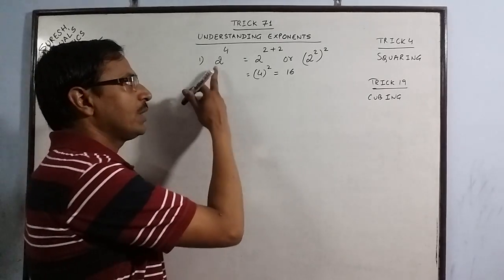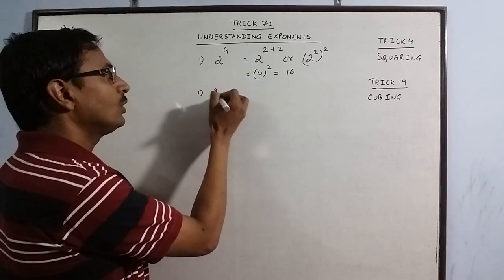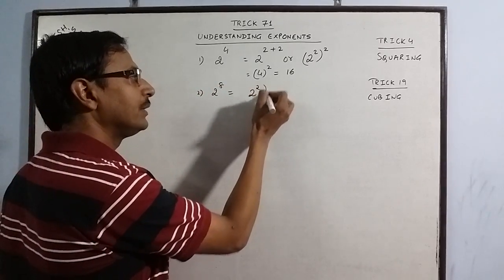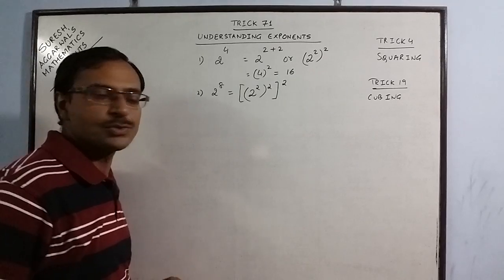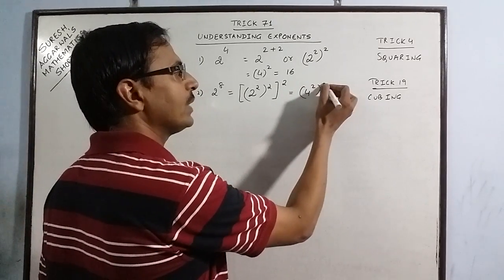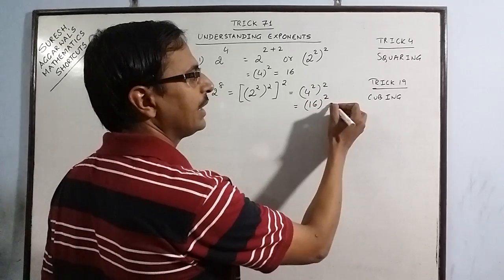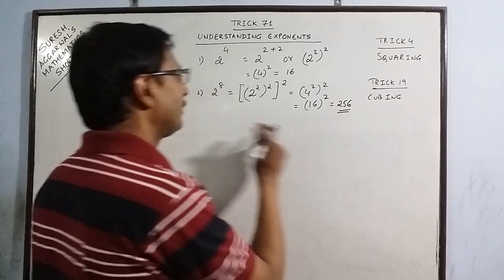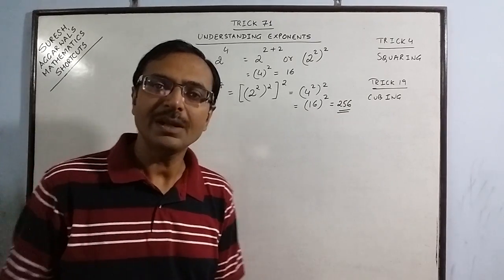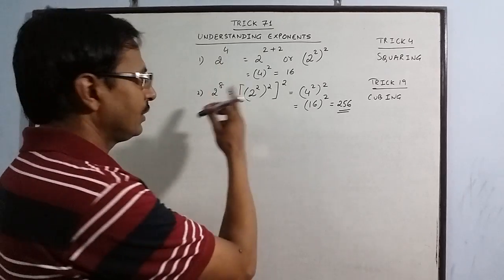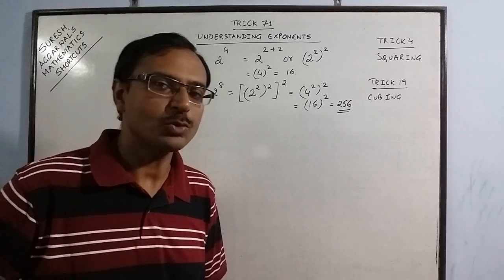This will become 4 raised to power 2 which is 16. If you know the square of 2, then you can square 3 times: 2 into 2 into 2 is 8. If you know 2 square is 4, now we are left with squaring twice. The square of 4 is 16, then we are left with squaring once and final answer 256 which gives you 2 raised to power 8. So instead of multiplying 2 eight times, we can multiply 2 into 2 is 4, then 4 into 4 is 16, then 16 into 16 is 256. That gives you 2 raised to power 8.